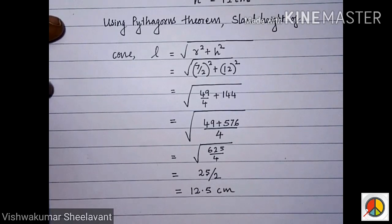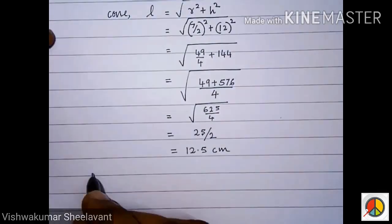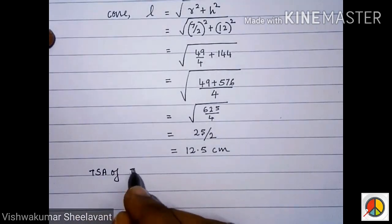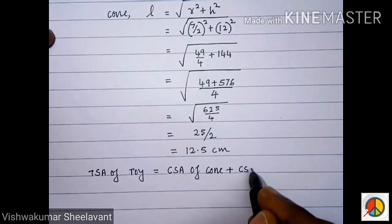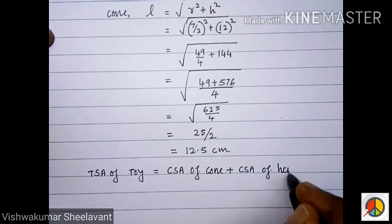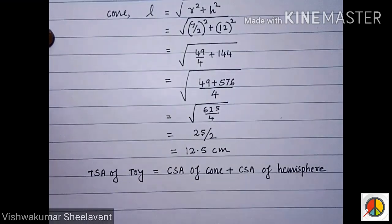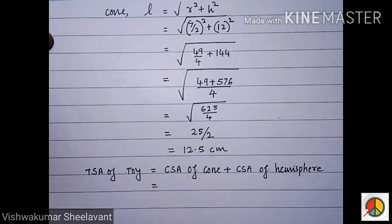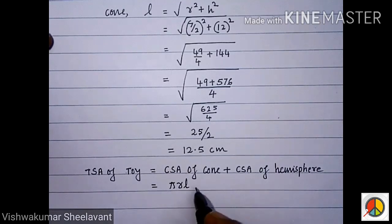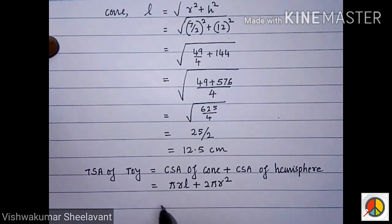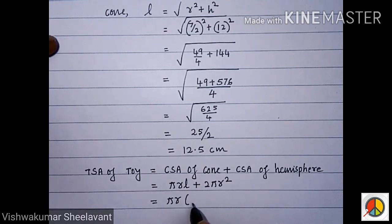Now we find the total surface area of the toy. TSA of toy equals CSA of cone plus CSA of hemisphere, which is πrl plus 2πr². Taking πr as common outside the bracket, we get πr(l + 2r).